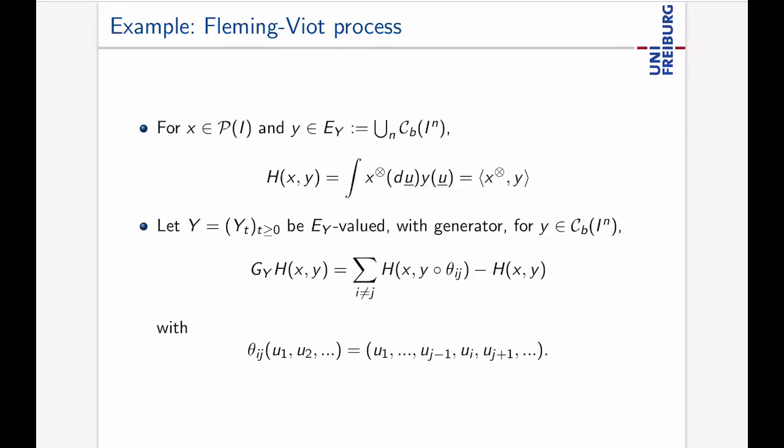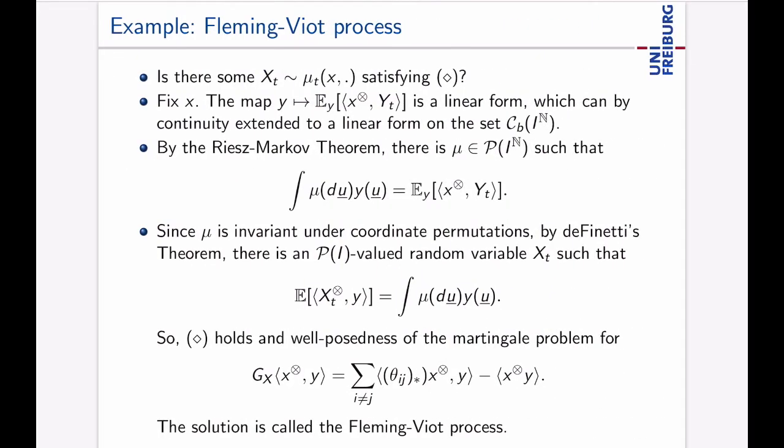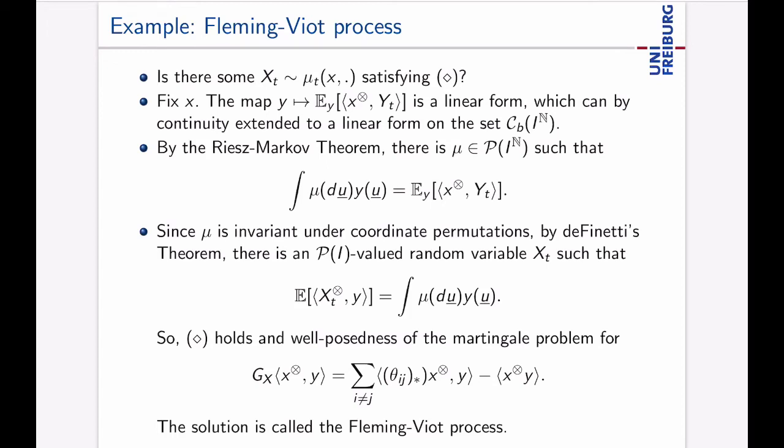We need a description of Y and that's easily done using the generator. What does Y do? It jumps from Y to Y composed with θij and what is θij? θij is the function which identifies the variables i and j. So instead of uj what you would have here you just use ui here which then for the Fleming-Viot process will mean that you have a resampling event and one interval died which had variable j and the i-th interval here replaced the j.